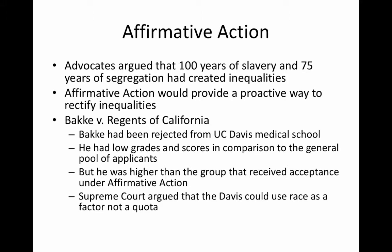Affirmative action is one of the big controversial issues of this time period. Advocates argued that due to 100 years of slavery and 75 years of segregation, massive inequalities had formed, and affirmative action was the best proactive way to rectify them. The idea was that colleges and employers would establish quotas — hiring a certain number of minorities to rectify the past and ensure diversity.